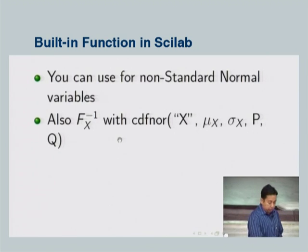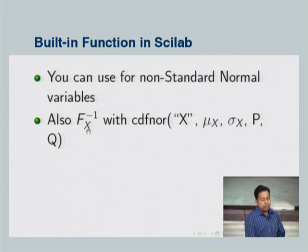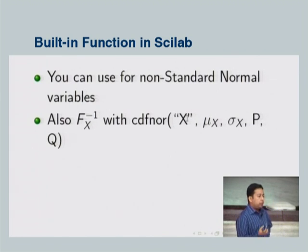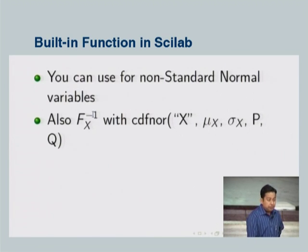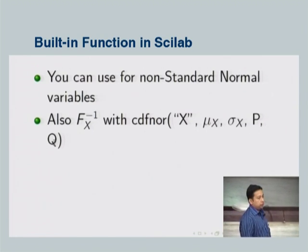You can also use cdfnor to find the inverse. The format changes slightly: the first argument becomes 'X', meaning we are finding the value x for which we know the CDF. We supply the mean, the standard deviation, the CDF value p, and q equal to 1 minus p. Scilab requires both p and q, so we supply both.